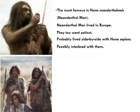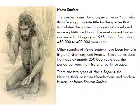Homo neanderthalensis, the Neanderthal man, lived in Europe. They went extinct but probably lived side by side with Homo sapiens, possibly interbreeding with them. Homo sapiens — the species name means 'man who thinks' — an appropriate title for the species that formulated spoken language and developed more sophisticated tools.